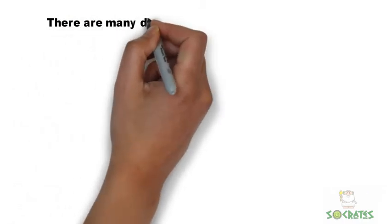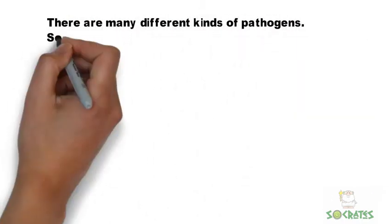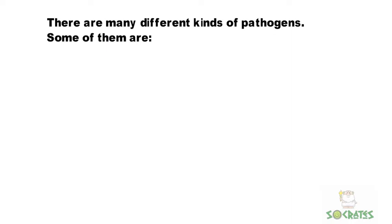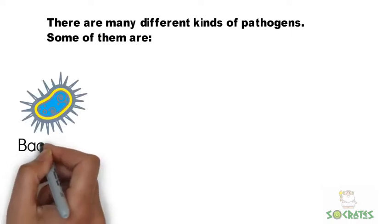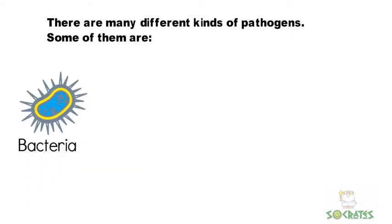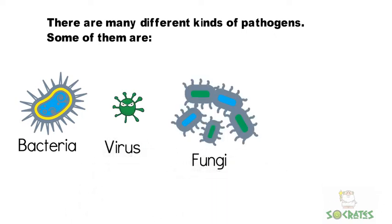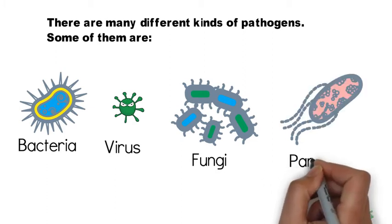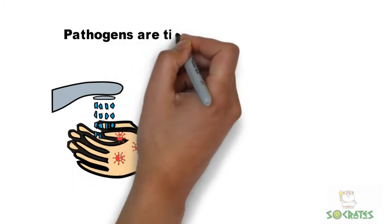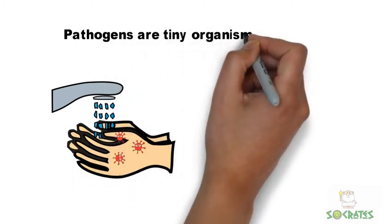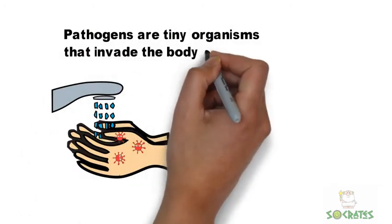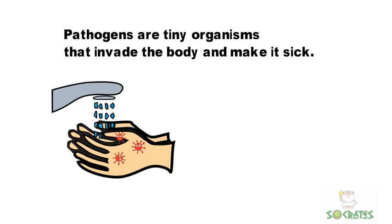There are many different kinds of pathogens. Some of them are bacteria, virus, fungi, and parasite. Pathogens are tiny organisms that invade the body and make it sick.